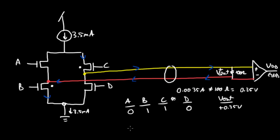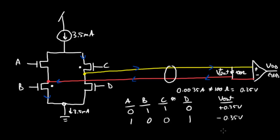In the other logic case, where A is 1, B is 0, C is 0, D is 1, the output is going to be minus 0.35 volts. You can convince yourself that's the case.